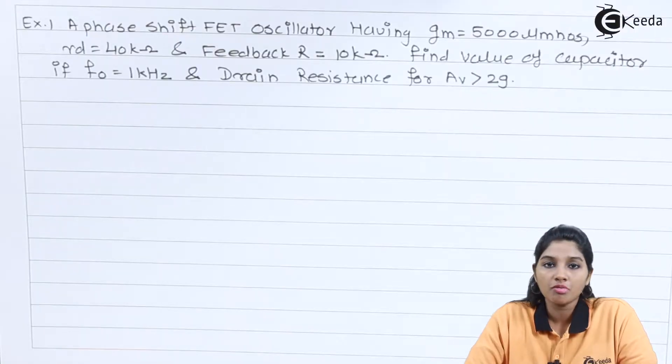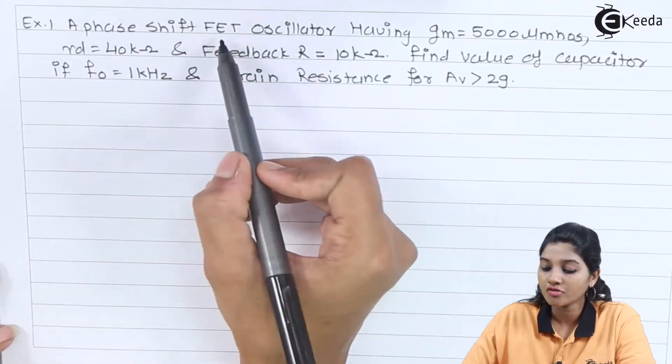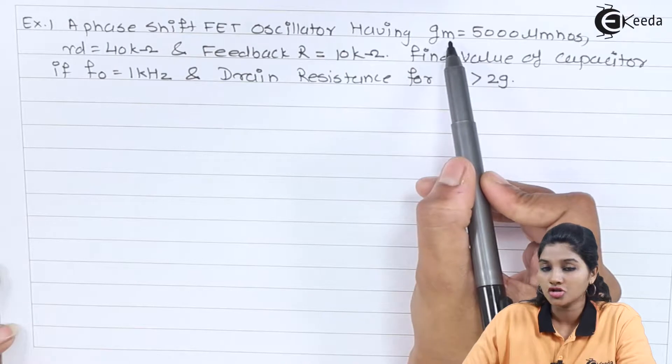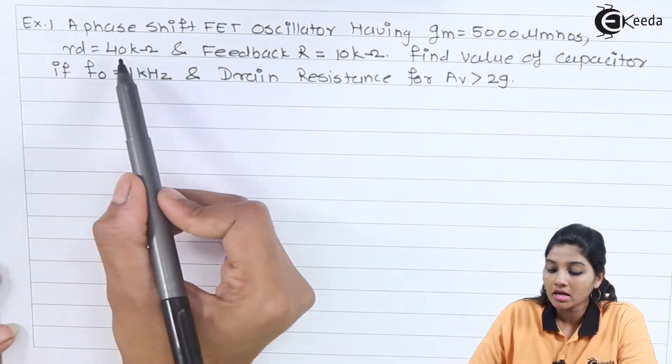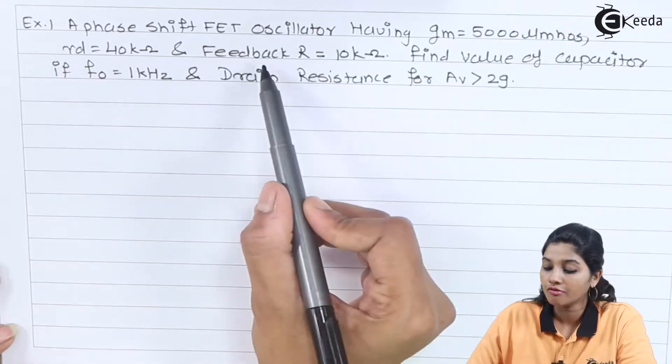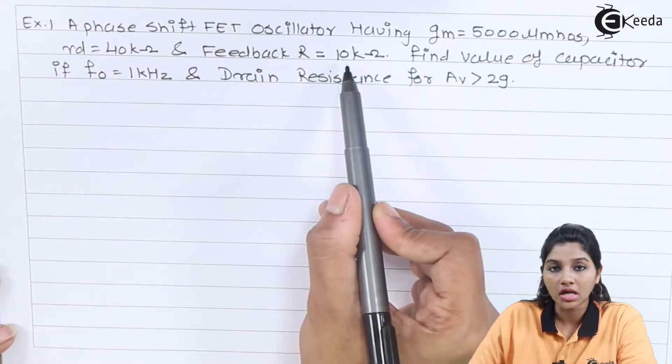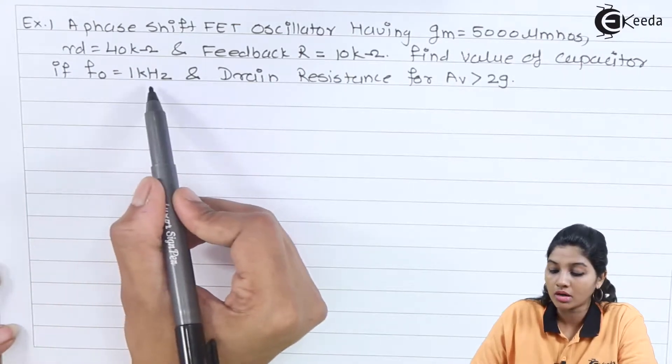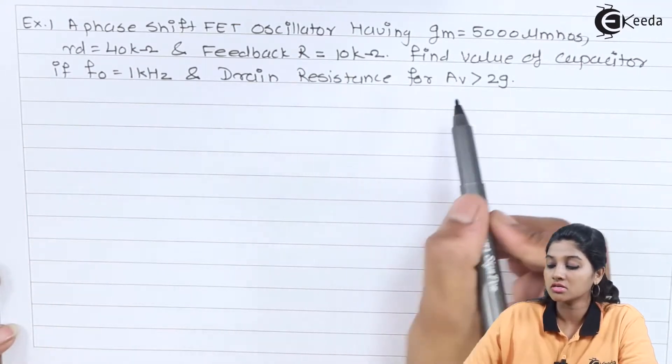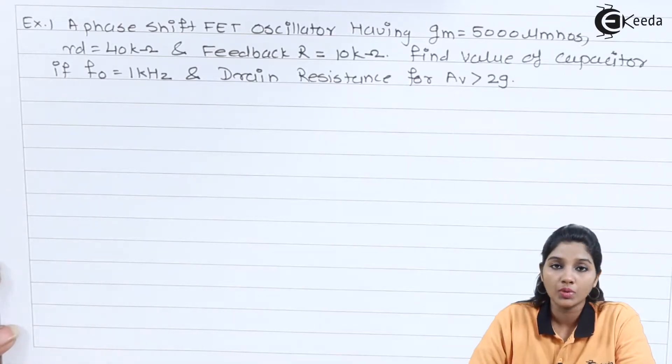The statement of first problem is: a phase shift FET Oscillator having GM equals to 5000 micro ohms, RD equals to 40 kilo ohms, feedback R equals to 10 kilo ohms. Find the value of capacitor if frequency F0 equals to 1 kilohertz and drain resistance for AV greater than 29.